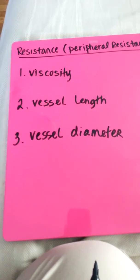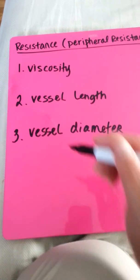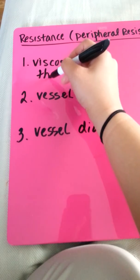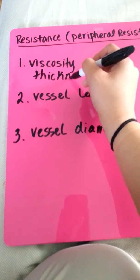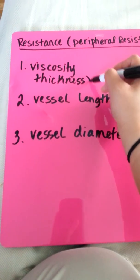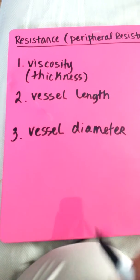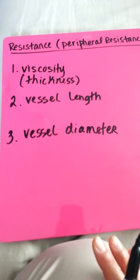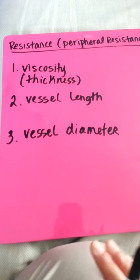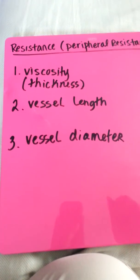Okay, so viscosity, like I said before, is thickness. Let's just put thickness down here so we remember what viscosity means. So if the blood viscosity thickens, the flow decreases.